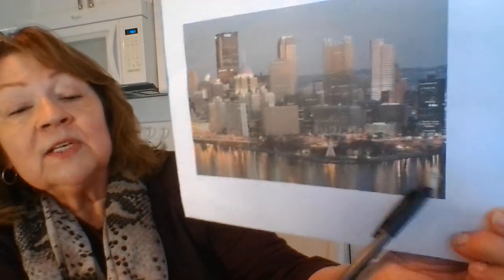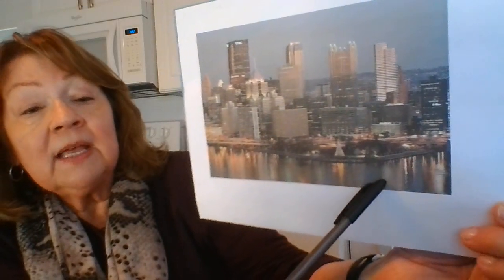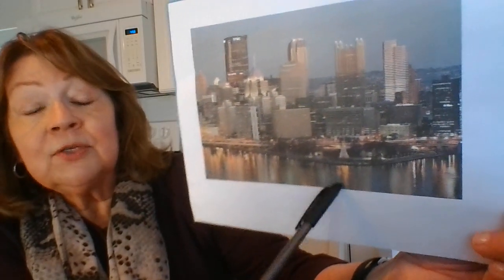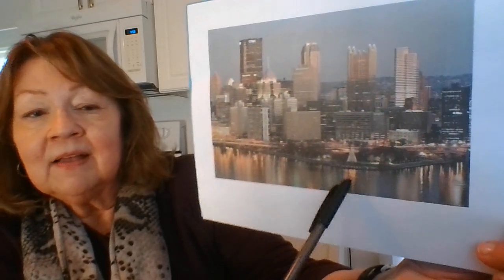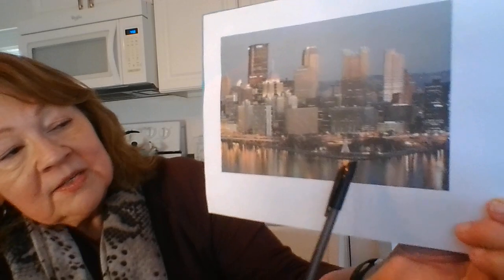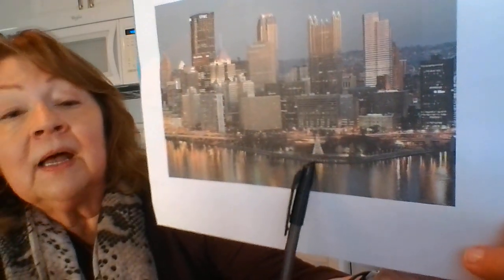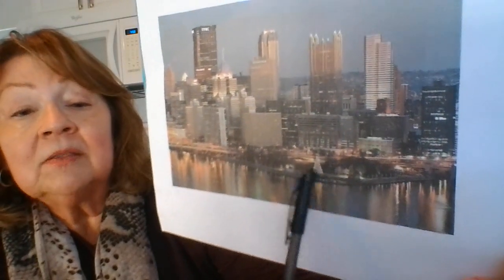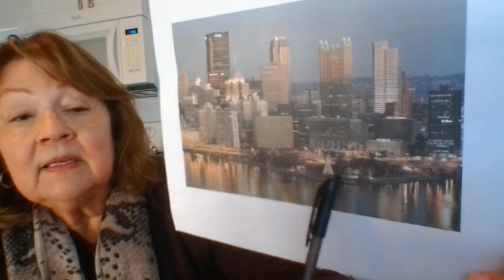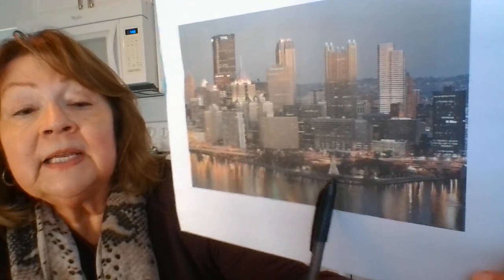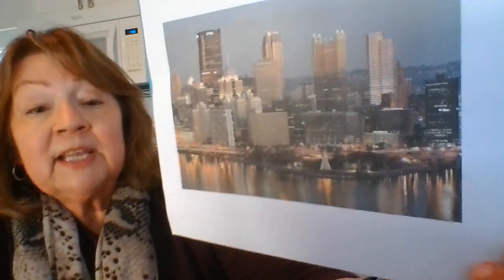Pittsburgh sits at the confluence of two rivers — the Allegheny coming down from northern Pennsylvania and the Monongahela coming up from West Virginia. When two rivers converge, we call it the confluence, and at that point they form the Ohio River, which flows north and then south into the Mississippi. At the confluence is Point State Park, a monument to Fort Pitt — a very beautiful example of planned open space.